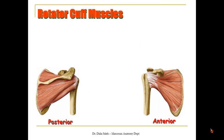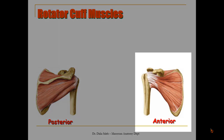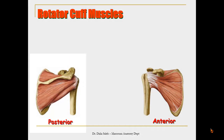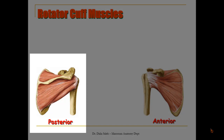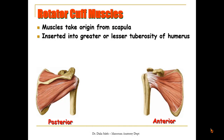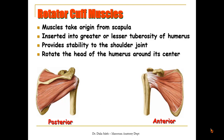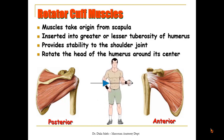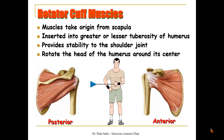Now for the four rotator cuff muscles. Here we are looking at the scapula and humerus from the front, and here from the back. These muscles take origin from the scapula and insert into the greater or lesser tuberosity of the humerus. They provide stability of the shoulder joint because of their close proximity to it, and they also rotate the head of the humerus around its center — this is lateral rotation and this is medial rotation.